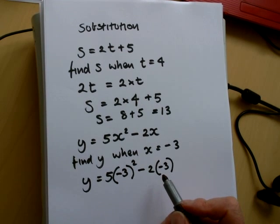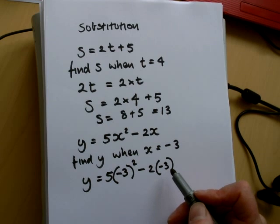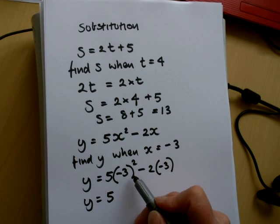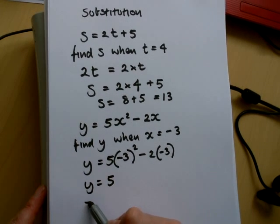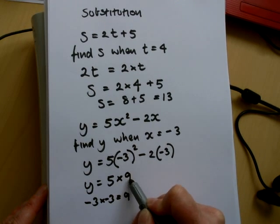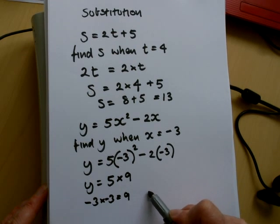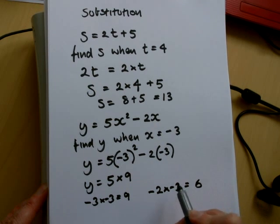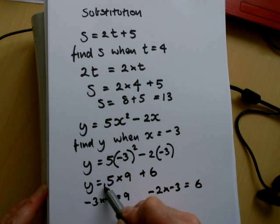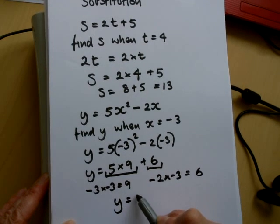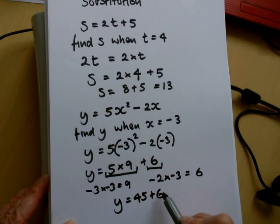This is harder because you have to understand some of the rules of multiplying with negative numbers. So y will equal 5 times minus 3 squared. The rule for a minus times a minus is that the answer will be a plus. So we've got 5 times 9, then minus 2 times minus 3, which again gives a plus — so plus 6. So 5 times 9 plus 6, so y will equal 45 plus 6, so y finally equals 51.